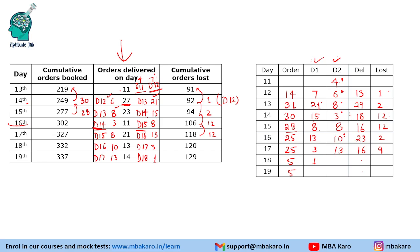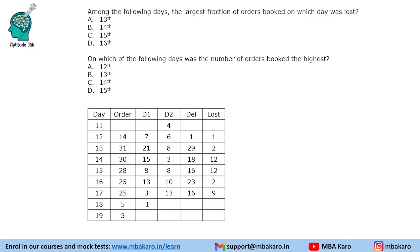This was a complicated table requiring a lot of thinking — definitely not a first-attempt question in the exam if you haven't done similar problems before. Now for the questions: among the following days, the largest fraction of orders lost — if you observe, lost fraction is quite high for two days. On 14th it is 12/30 and on 15th it is 12/28. Since the numerator is the same but the denominator is lower, the fraction is highest on 15th.